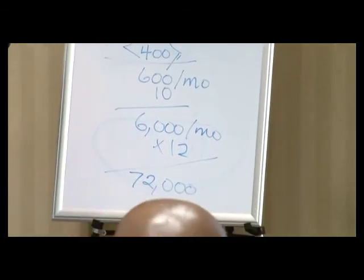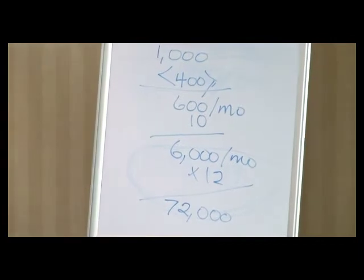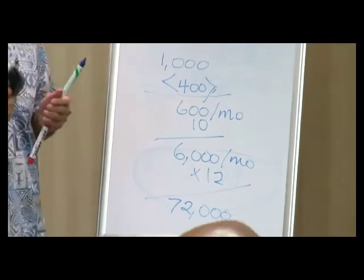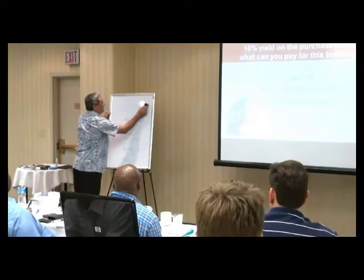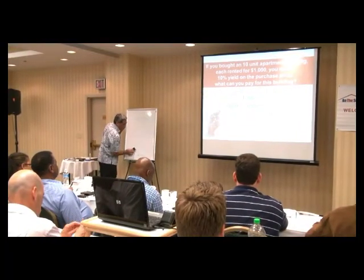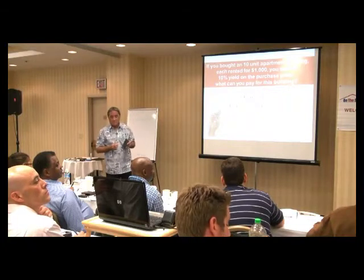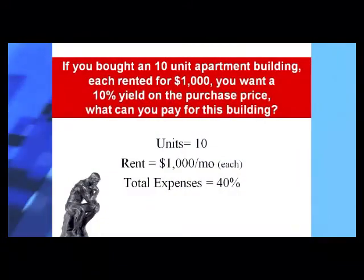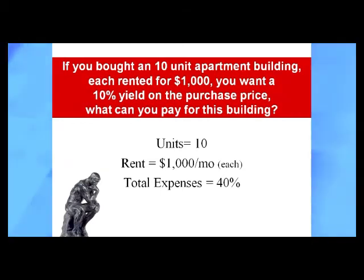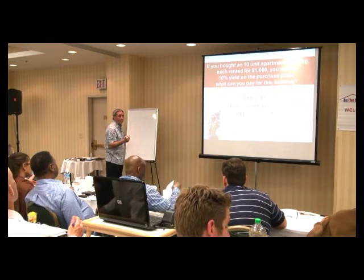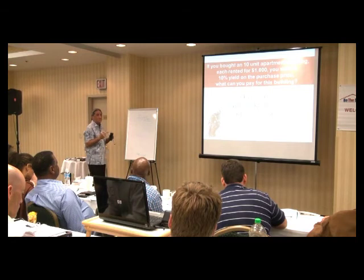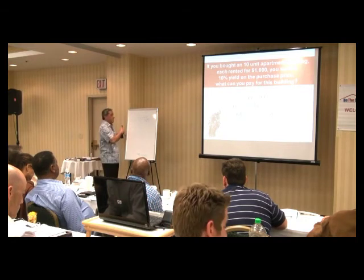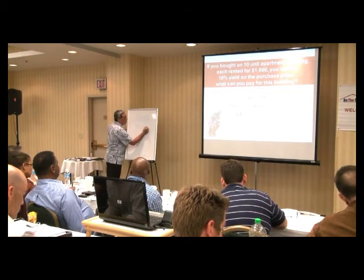Is $72,000 a good number? It depends on how much the property costs. The question is: we want to find out how much would you pay if you wanted a 10% yield. Yield means for every dollar out, how much does it bring back in percentage. So we take how much we receive in a year — $72,000 — and divide it by 10%, which gives you a figure of $720,000.